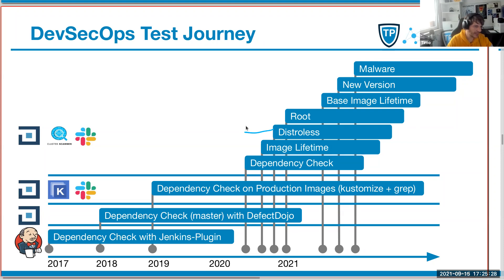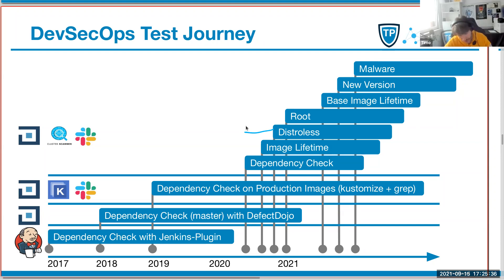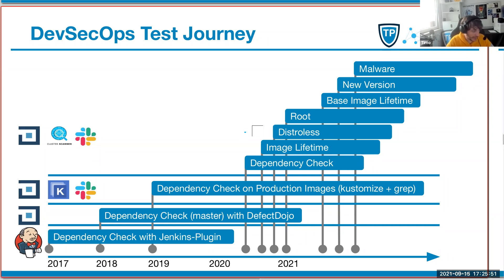When you say we are not following distroless in our organization right now, you can disable the distroless scan in the collector configuration and then you don't get informed about distroless anymore. So you can fine-tune that. I will also tell you later how you can do it on object level or namespace level. When you say mostly I don't want this scan, but here in this specific namespace I want to enable it for all images inside - that's also possible.